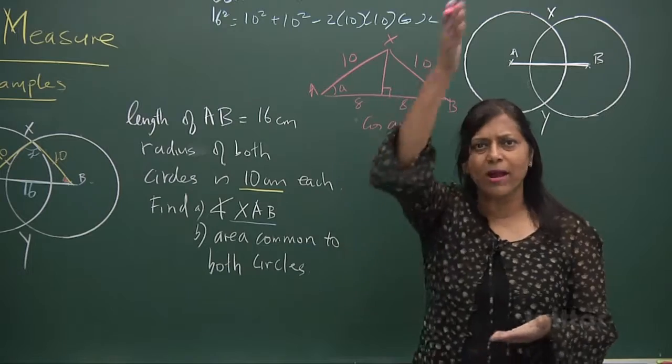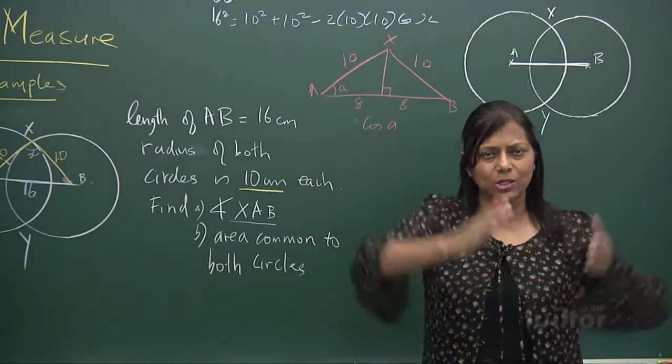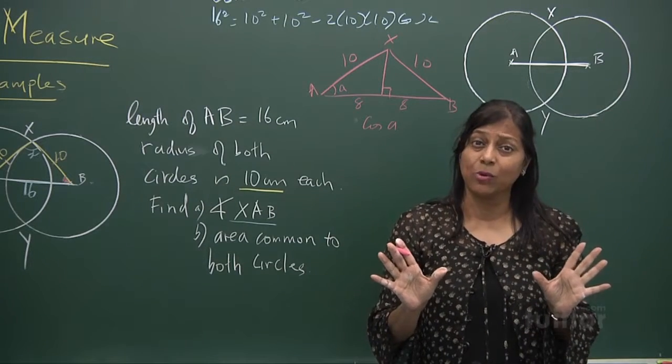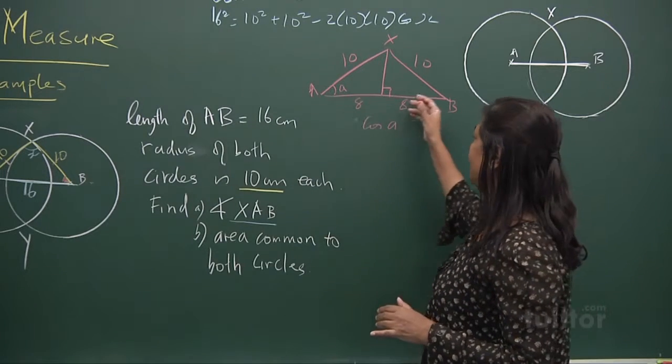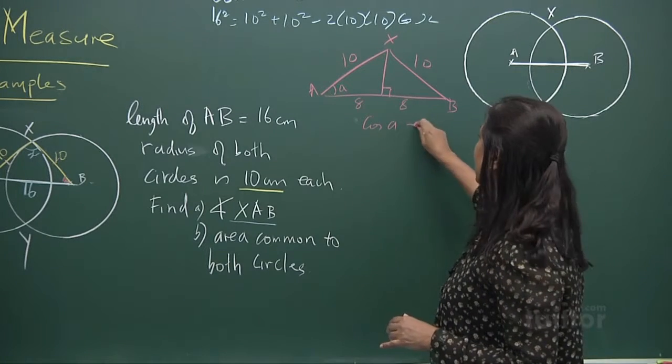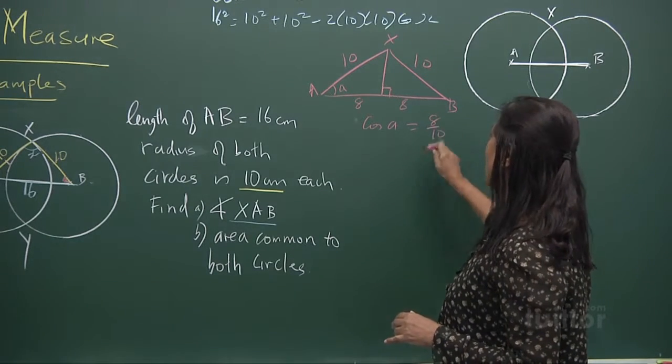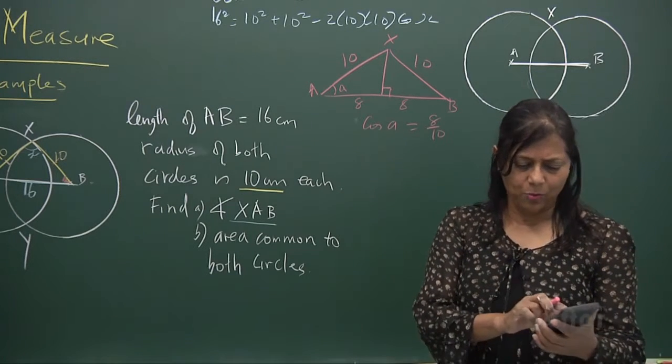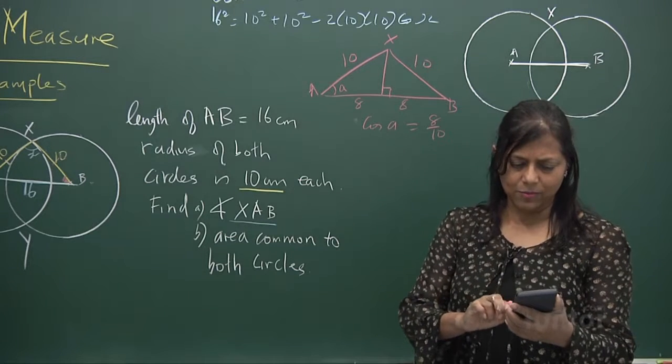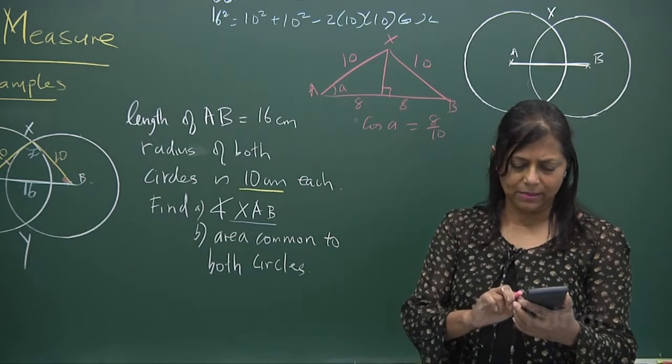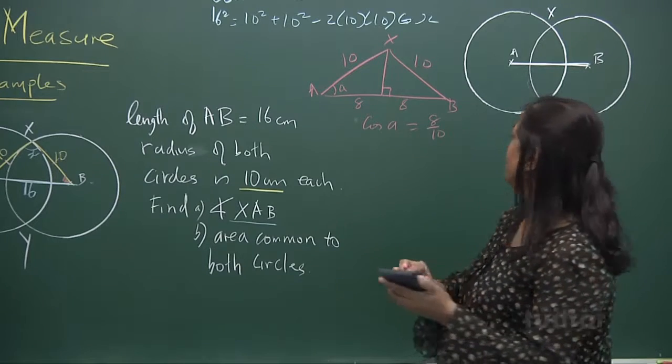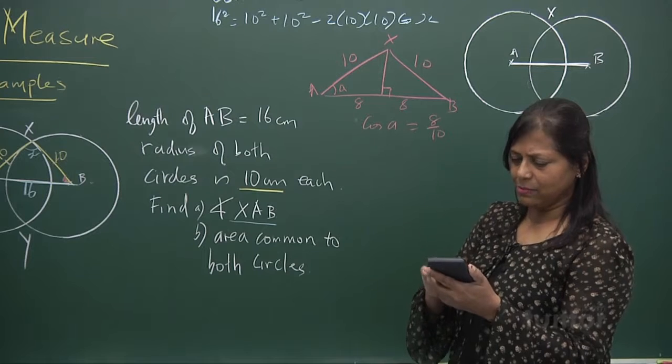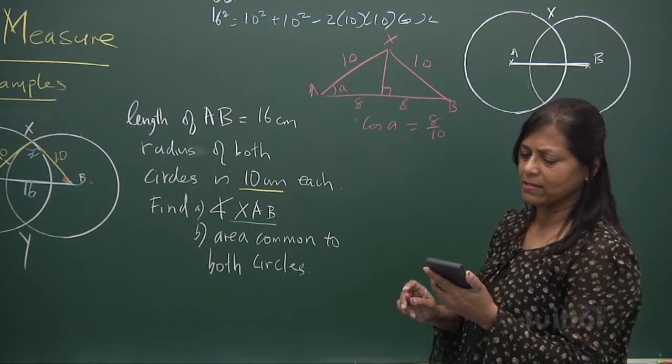Cos A. Because in an isosceles triangle, when it cut into two, when two sides are equal, it divides them into two equal parts. So that's A and 8. And what is cos A? Cos A is 8 over 10, 4 over 5. We want it in radians, so you press inverse cos.